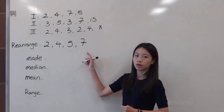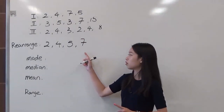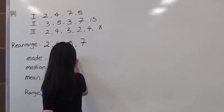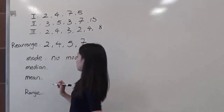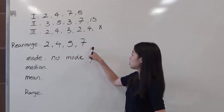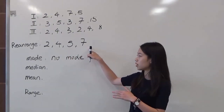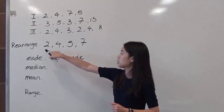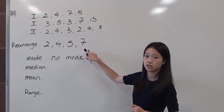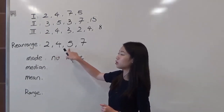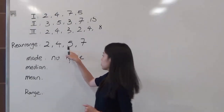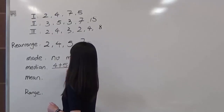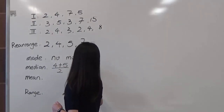Since all four numbers appear only once, we have no mode for this situation — the answer will be no mode. And then we have to find the median. This is an even number set. The median is the middle value of the data set. Since we have four numbers, we have to choose the two most middle numbers, add them up, and divide by 2. So in this case, we have 4 plus 5 divided by 2, which is 4.5.